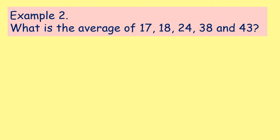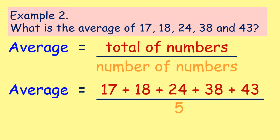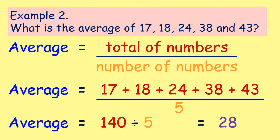In our second example we've got a bit larger numbers. Remember in science you're always allowed to use a calculator, so you don't have to do all this maths in your head. This time we have the average of 17, 18, 24, 38, and 43. The total is 17 plus 18 plus 24 plus 38 plus 43, and our number of numbers is 5. Using a calculator, those numbers add up to 140, and 140 divided by 5 gives us 28.